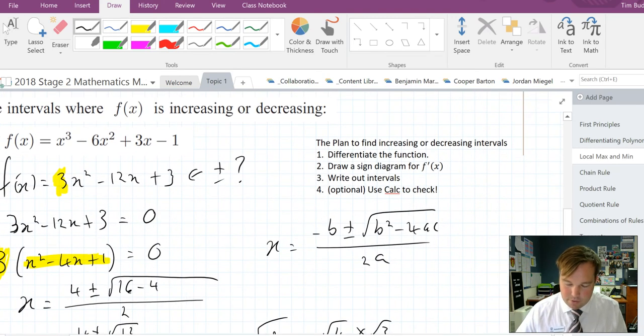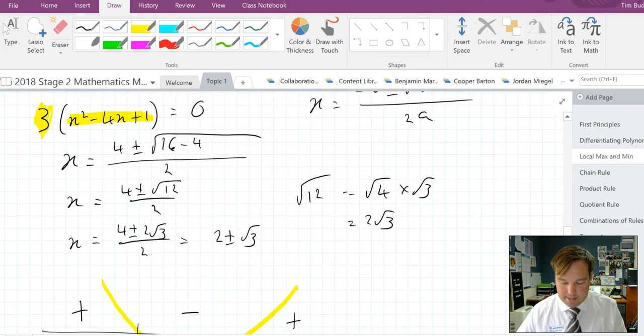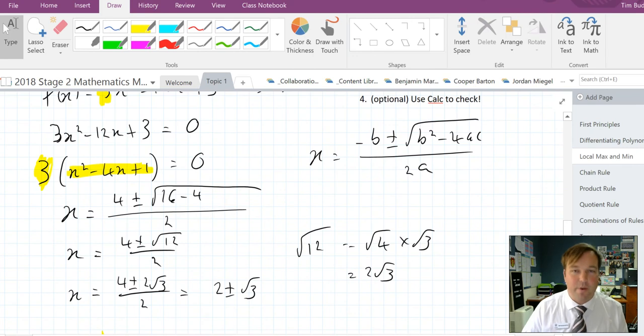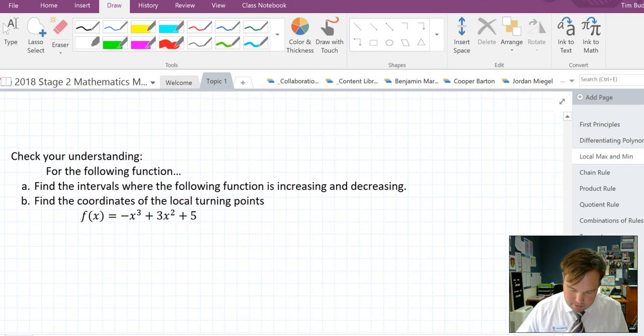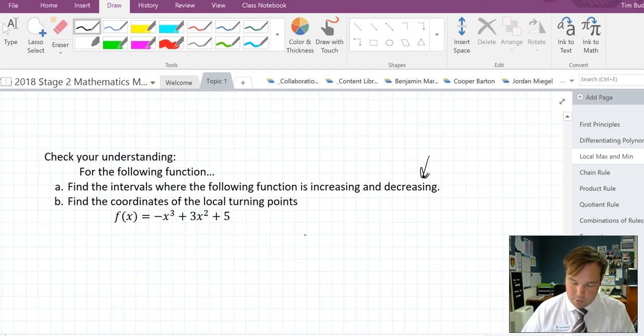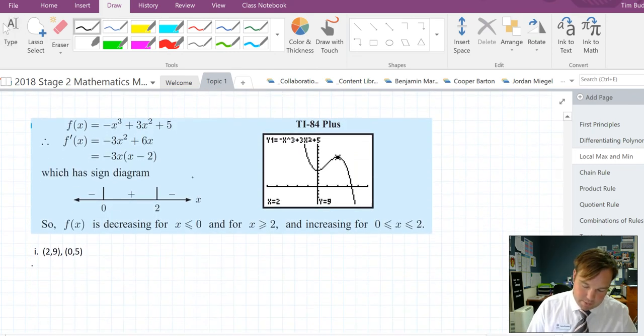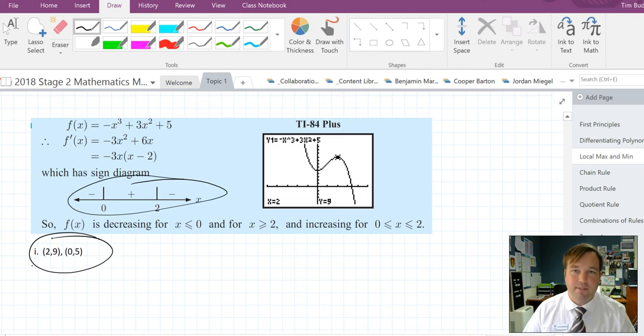So the steps again, find the derivative, solve for it equal to zero, draw a sine diagram for when it equals zero, and then think about it in terms of the derivative function of where it's going to be positive and when it's going to be negative. Could you check your understanding by finding the intervals where the following function is increasing and decreasing? So we're thinking sine diagram and then find the coordinates of the turning points. Note I haven't restricted the domain so just find the local turning points, and the answers are sine diagram looks like that and local turning points are there. Hope you went all right. Thank you for watching, keep watching. Bye.